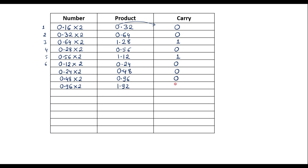Now 0.96 multiplied by 2 gives 1.92 — write 1 as carry. The remaining fraction 0.92 multiplied by 2 gives 1.84 — write 1 here. This brings us to the 7th, 8th, 9th, 10th, and 11th steps. For the 11th step, 0.84 multiplied by 2 gives 1.68 — write 1.